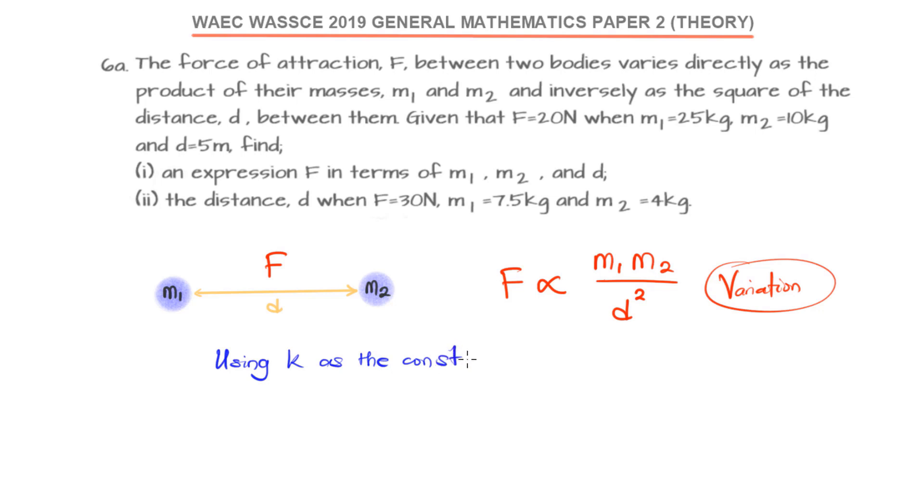For us to make it an equation, we need to introduce the constant of proportionality. So that constant here, I want to use K, so F is equal to K multiplied by M1 and M2 over D raised to power 2.